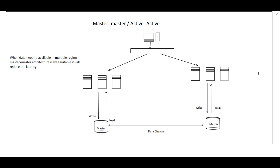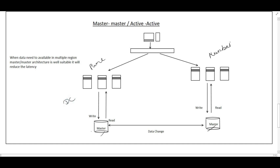In active-active architecture we have two sites — a Pune site and a Mumbai site. Both have a master database and both can handle read and write requests within their own data center, so there is no latency issue across different geographic locations.